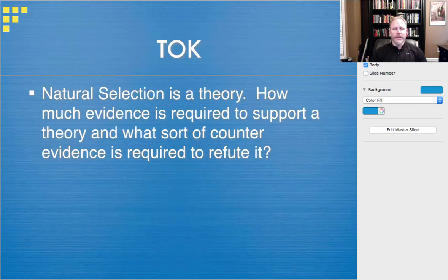This is going to begin chapter 23 in our evolution unit. The TOK question here to think about is: natural selection is a theory. How much evidence is required to support a theory, and what sort of counter-evidence is required to refute it?